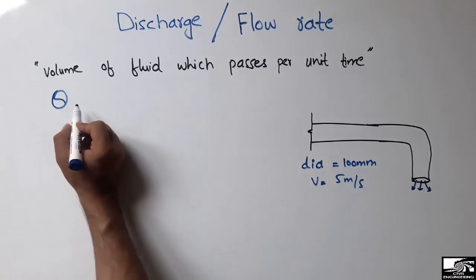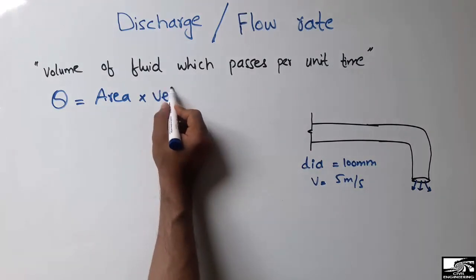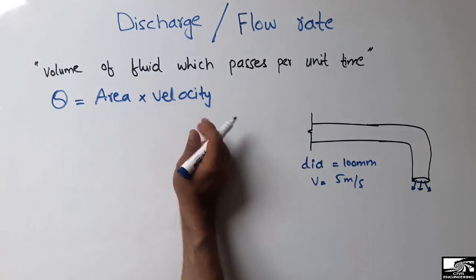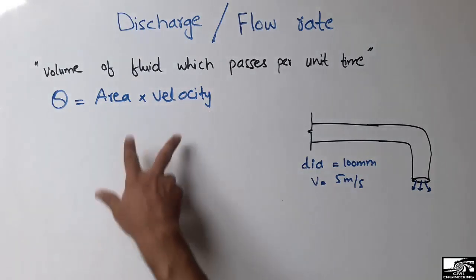Its formula is area into velocity - the area of the pipe and the velocity of the fluid which is flowing in the pipe. So by multiplying these two quantities we can get the discharge.